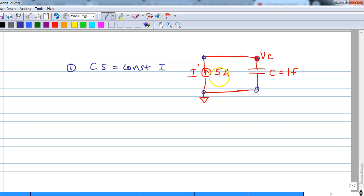But the current source will continue to give you 5 amps. To show it graphically, let's say that my x-axis is voltage and my y-axis is current.